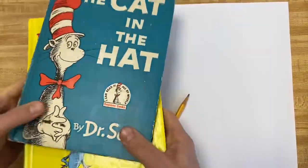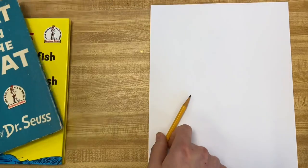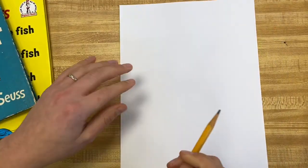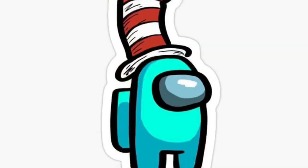One Fish, Blue Fish. I've got a couple of my old books here that I will use as a reference, but we are going to make an Among Us character with a Cat in the Hat hat and call him Dr. Seuss.